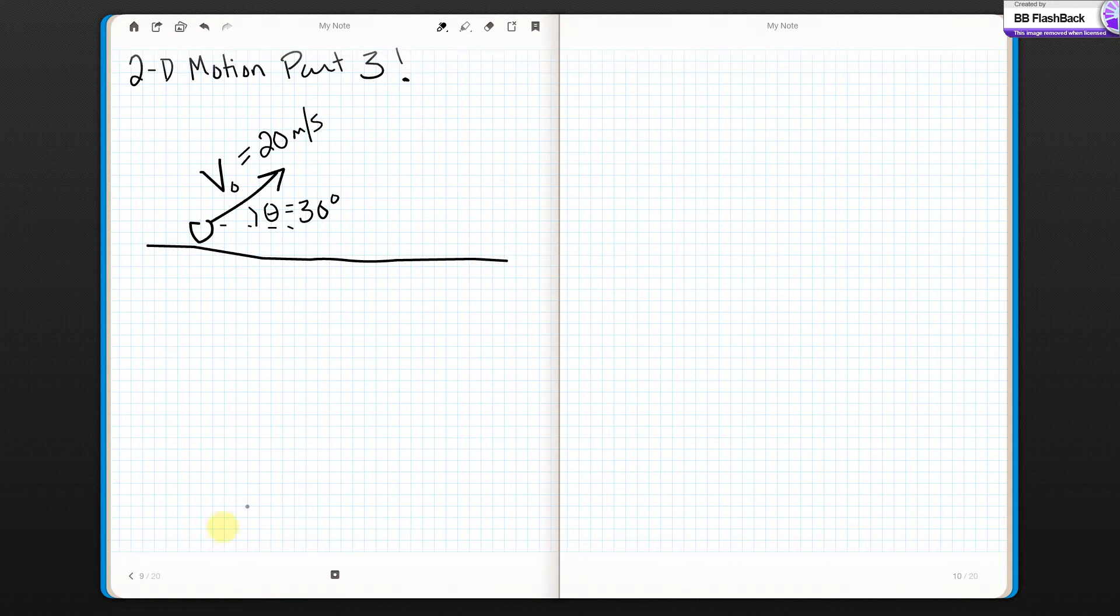Okay, so we just finished a problem where we had a ball kicked at an angle of 30 degrees to the horizontal at an initial velocity of 20 meters per second, and we found that the distance it goes before it hits the ground again was the range equation.